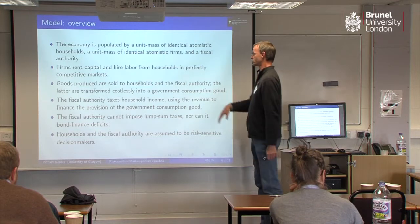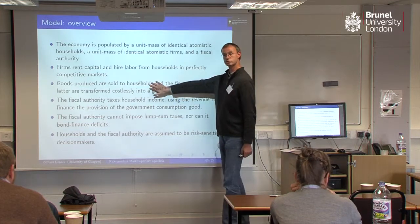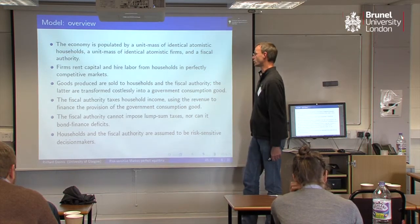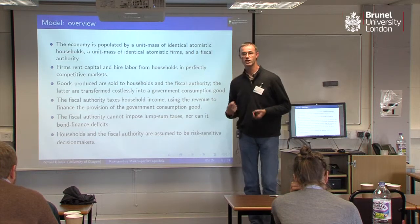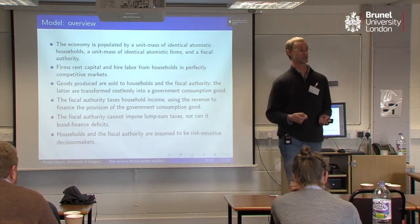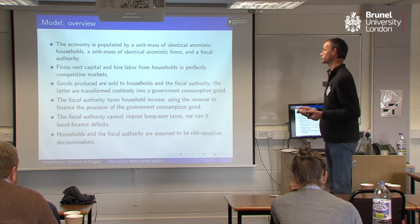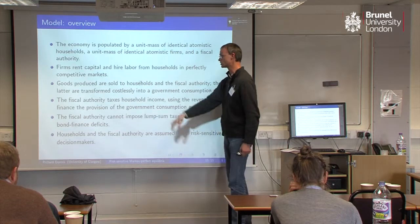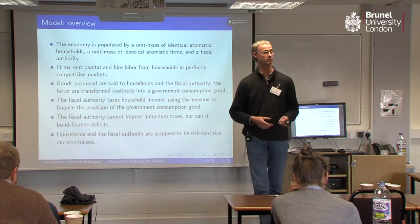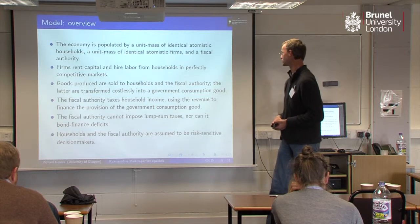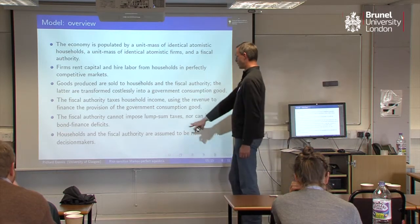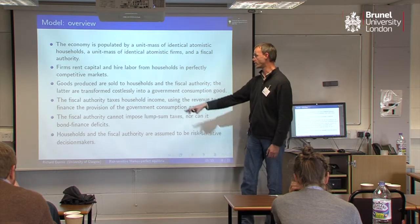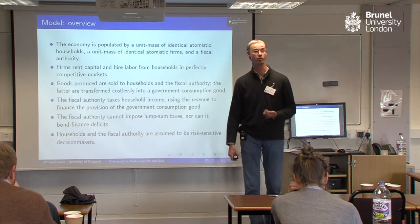The goods that are produced are going to be sold either to households for consumption and investment purposes, or sold to the fiscal authority — in the latter case these goods are going to be transformed costlessly into a government-provided consumption good. The fiscal authority finances their purchase of consumption goods by a linear tax on income, so they're taxing the household's income. We don't allow them to impose lump sum taxes.